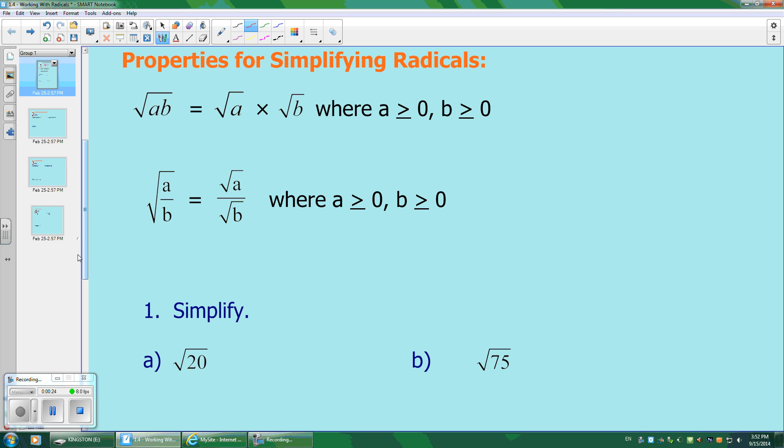You have two properties. If you have a root of a number ab, you can split it up into factors a and b. Just make sure that you still have the roots above them. And we also have to specify that there are restrictions. a can only be bigger than or equal to 0 because you can't take a square root of a negative number. And then b has the exact same restrictions.